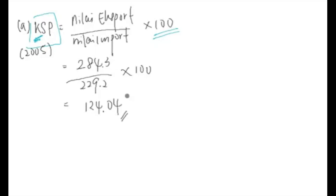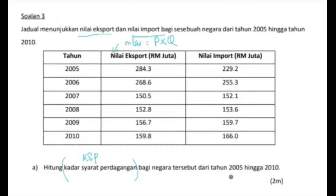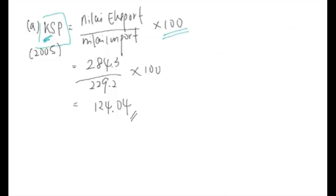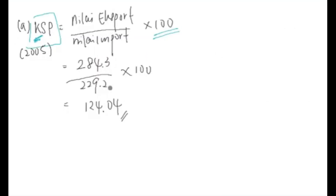Ingat lagi satu perkara, pastikan jawapan yang diberikan ada dalam 2 tempat perpuluhan sahaja. Soalan ini bukan hanya minta kita cari untuk tahun 2005, dia nak daripada tahun 2005 hingga tahun 2010. Untuk maklumat pelajar, rumus pengkiraan yang sedemikian kita hanya perlu tunjuk satu kali sahaja. Jawapan yang lain kita akan sediakan dalam bentuk jadual.